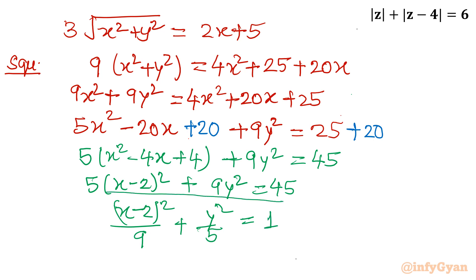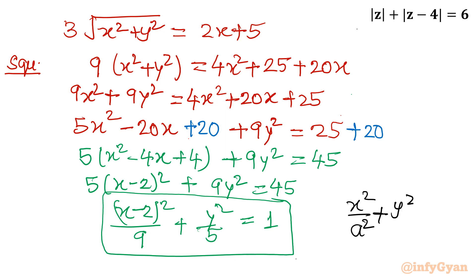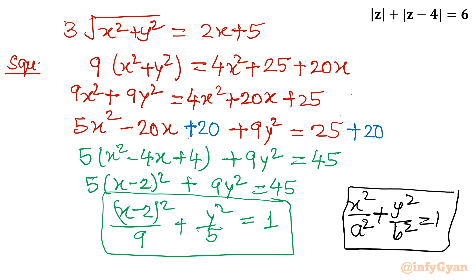Now tell me — what kind of equation is this? This is an ellipse. Recall that x squared over a squared plus y squared over b squared equal to 1 is the standard equation of an ellipse, where 2a and 2b are the major and minor axes respectively. So our locus is an ellipse. We find the locus by expressing the equation in terms of x and y and matching it to a standard form.